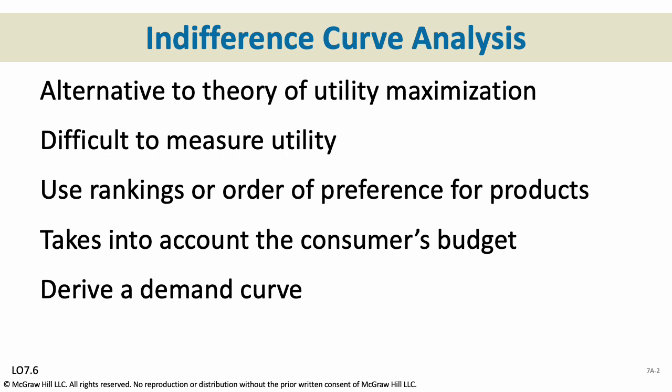Indifference curve analysis requires a consumer to be able to rank combinations of products — let's say product A and product B — in terms of preference. Once this has been established, we can make indifference curves, and then add how much money the consumer has to spend along with the product prices, and one can make a demand curve. The demand curve will ultimately be based on a consumer's preferences for a product, its price, and their budget. So this is another way to take into account measuring utility and budgeting.